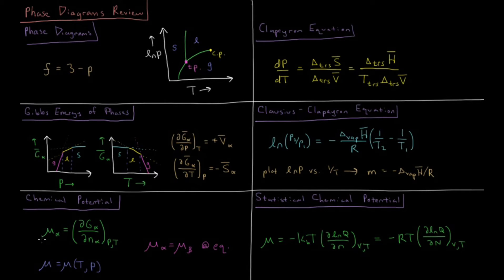The quantity of interest in phase diagrams is the chemical potential, which is the change in Gibbs energy with respect to the number of particles in a phase at constant pressure and temperature. For a single phase, it equals the molar Gibbs energy. When multiple phases coexist, their chemical potentials must be equal — for example, the chemical potential of solid and liquid are equal on the solid-liquid coexistence curve.